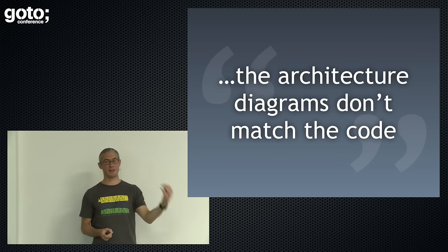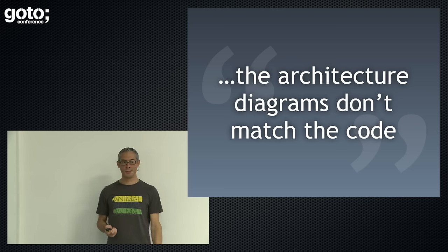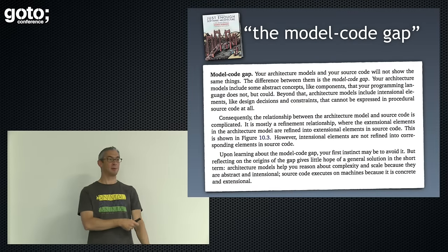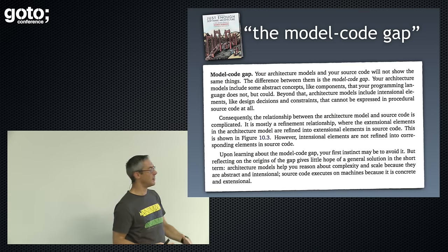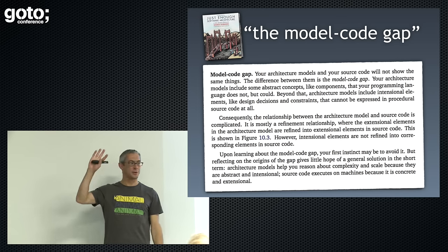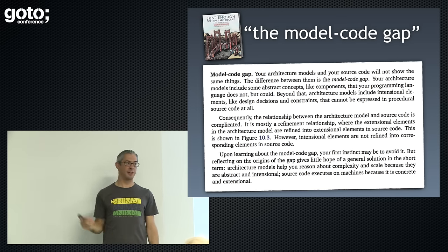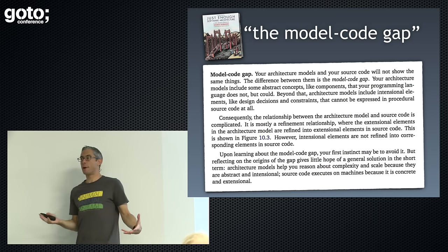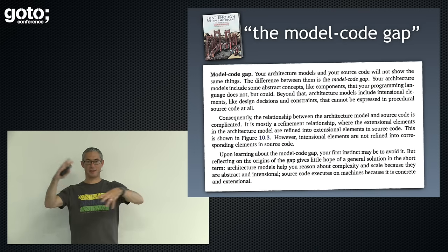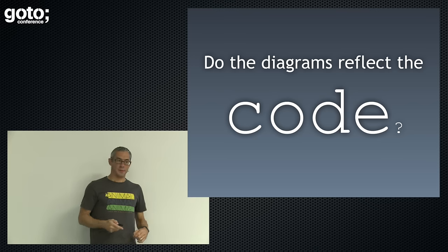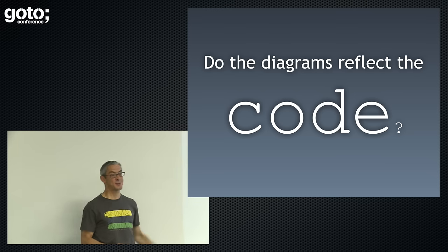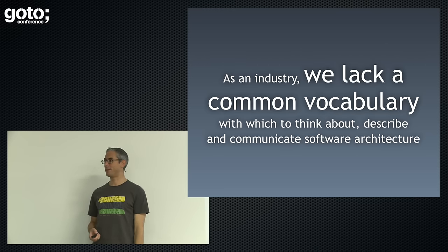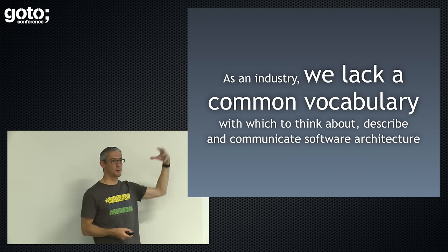If I'm drawing architecture diagrams, I need them to match the code — otherwise they're just lying to me. George Fairbanks calls this the model-code gap. When we're having an architecture discussion, we use abstract concepts like modules, components, and services — but we don't have those same things in our programming languages. In Java, is there a layer keyword? No. Is there a component keyword? No. But we create components and layers by assembling classes, interfaces, packages, and things together. Even in 2016, we don't have a consistent vocabulary to talk about software architecture. We think we do, but I don't think we do.